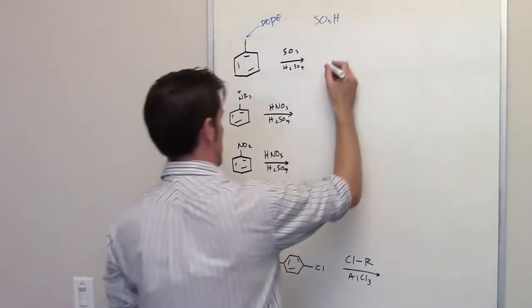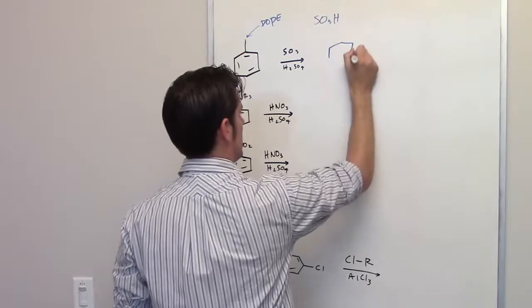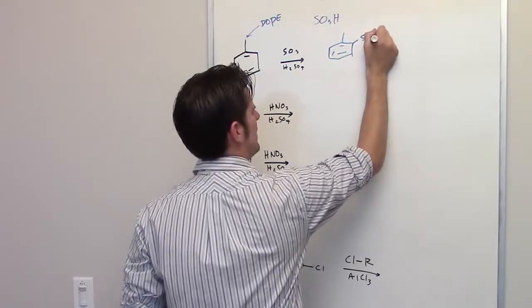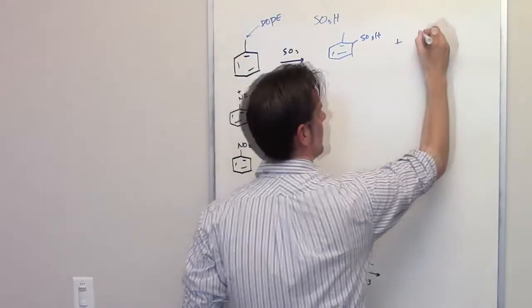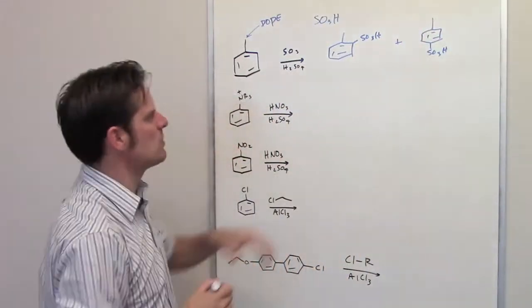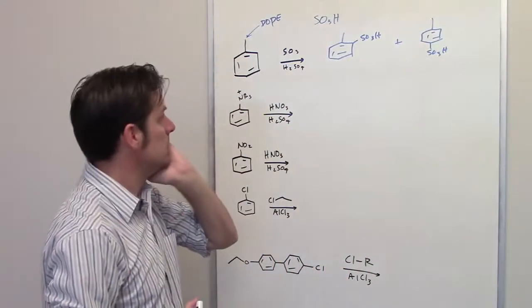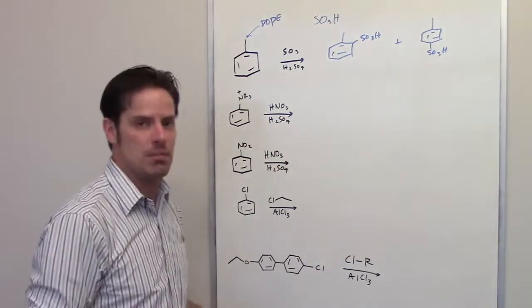Which means that the product of this reaction is going to be a mixture of the sulfonic acid group placed at the ortho position plus the para isomer. Now, I would assume that the para would be formed in a larger amount than the ortho, but you will get both products.